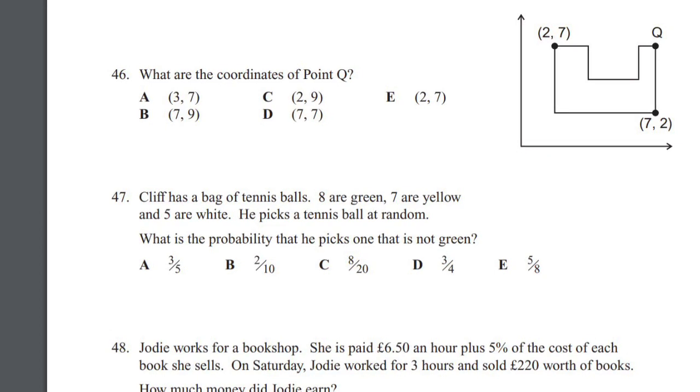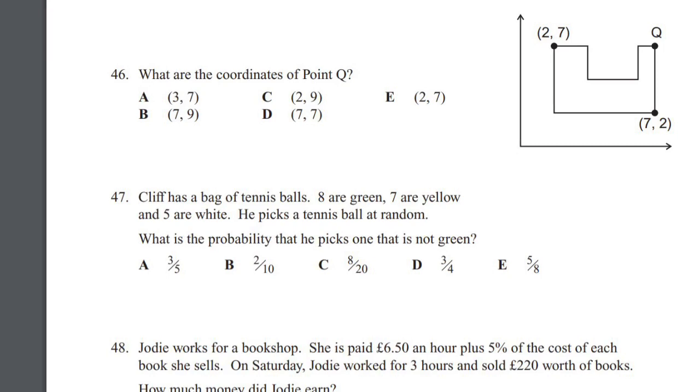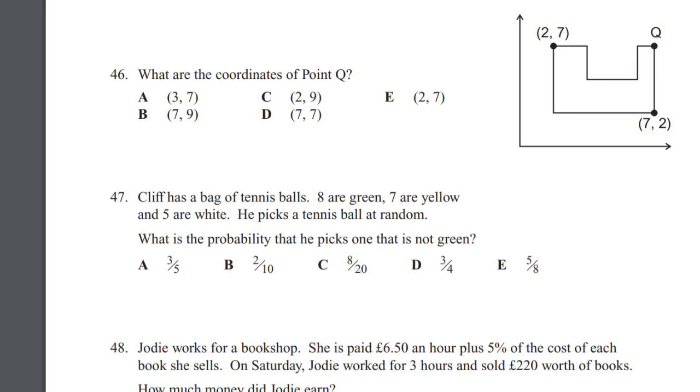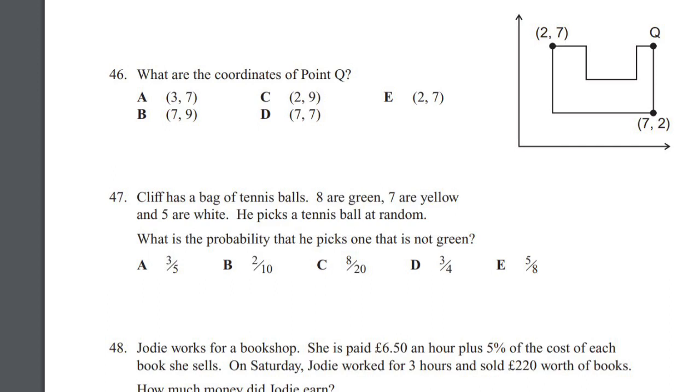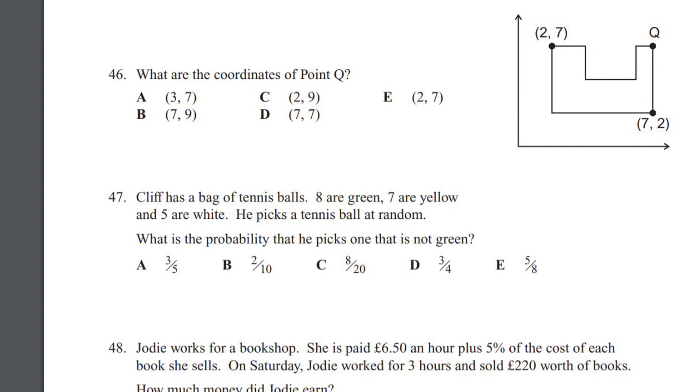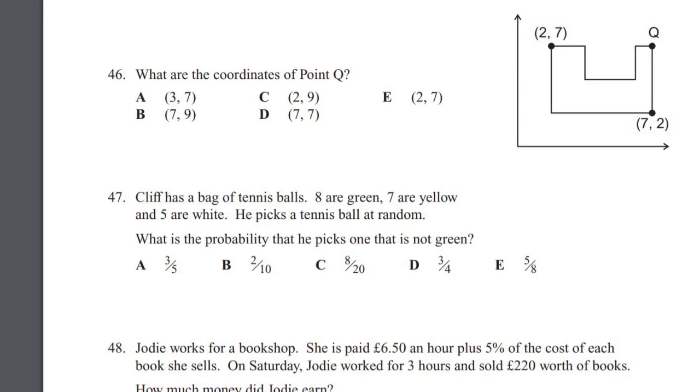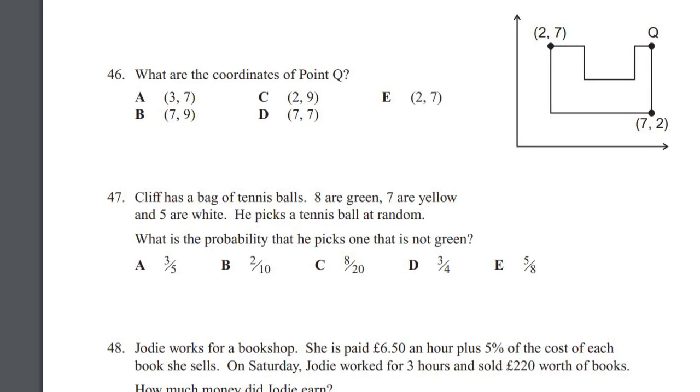Question 46. What are the coordinates of point Q? As seen on the photo on the right side, we have three different points: points (2,7), points (7,2), and the unknown point which we are given called Q.